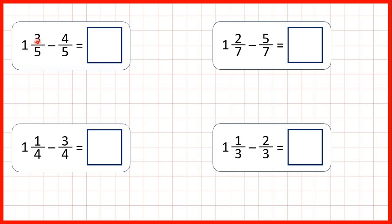We only have 3 fifths in our mixed number, but we want to take 4 fifths away. So what we need to do is change our mixed number to an improper fraction.